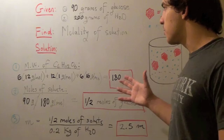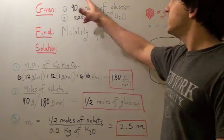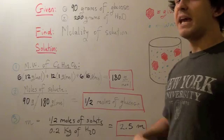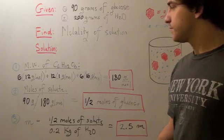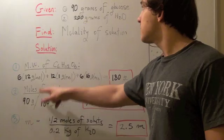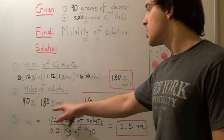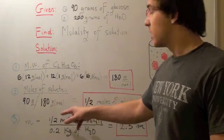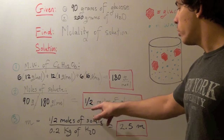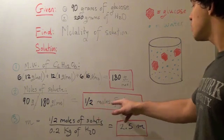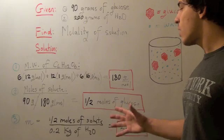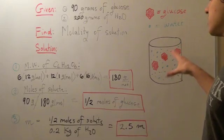Now, using this number, we can take our 90 grams of glucose divided by 180 grams of glucose per mole, which gets us 0.5 or one-half moles of glucose. That's our number of moles within this solution.